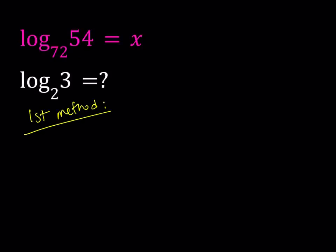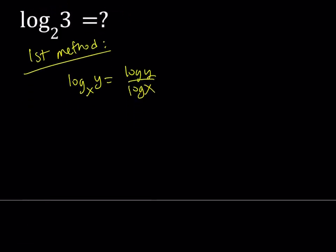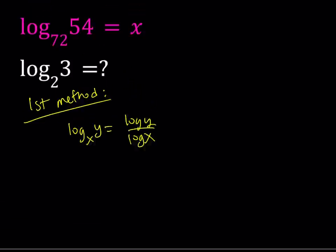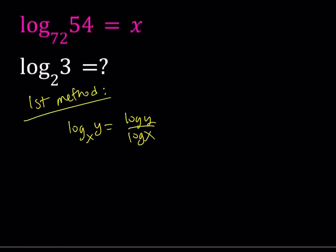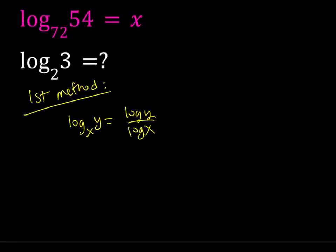Now my first method basically involves the change of base formula. If you have log base x of y, you can just write it as log y over log x in any base. In this case I'm going to be using base 10 because that's kind of standard and easy to use. So when I write log that means base 10 not the natural logarithm which I will use ln for.